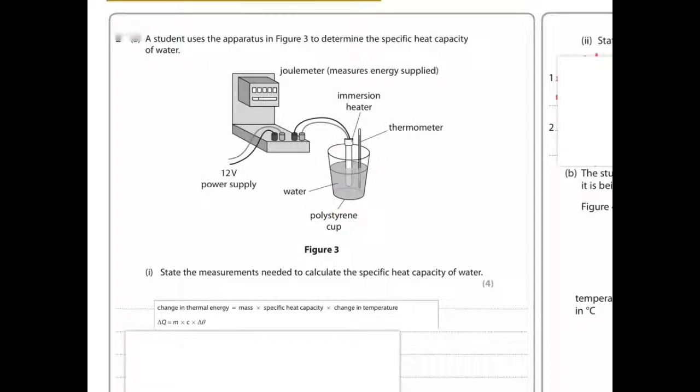Now, with specific heat capacity, we're looking at the amount of energy required to raise the temperature of a certain amount of water, or one kilogram of water, by one degree Celsius.